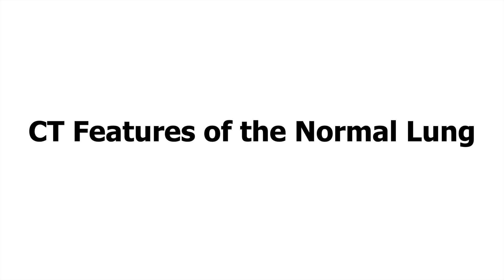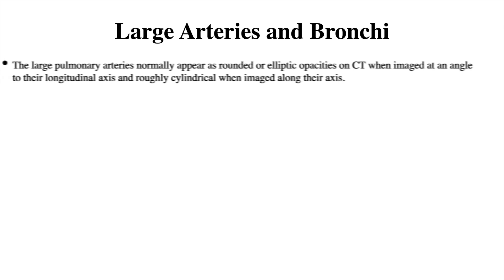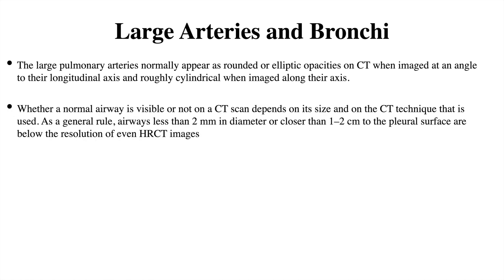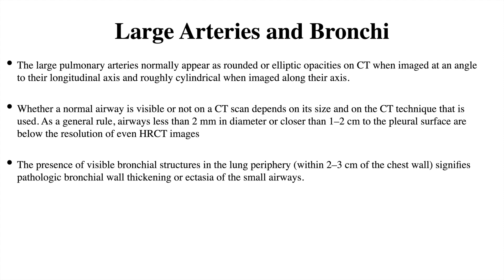Coming to the CT features of the normal lung — large arteries and bronchioles. The large pulmonary arteries and bronchioles normally appear as rounded or elliptical on CT when imaged at an angle to the longitudinal axis, but can appear cylindrical if imaged along the axis. Whether a normal airway is visible on CT depends on its size and technique. As a general rule, airways less than 2 mm in diameter and closer than 1 to 2 cm from the pleural surface are below the resolution of CT imaging. The presence of visible bronchial structures within 2 to 3 cm of the chest wall signifies pathologic bronchial wall thickening or ectasia of the small airways.